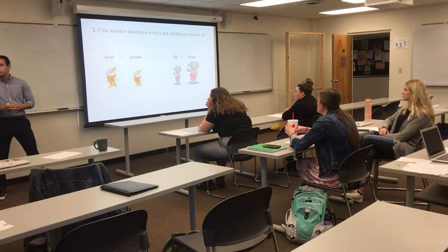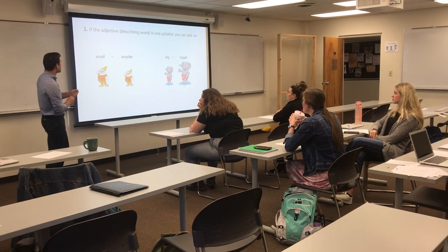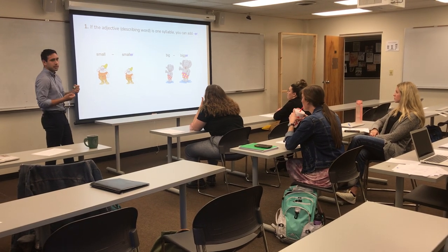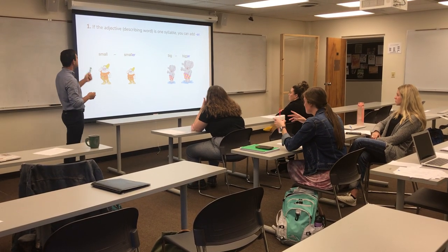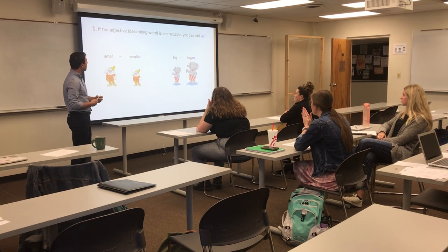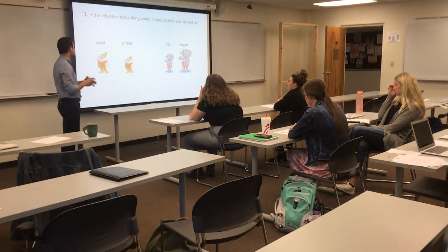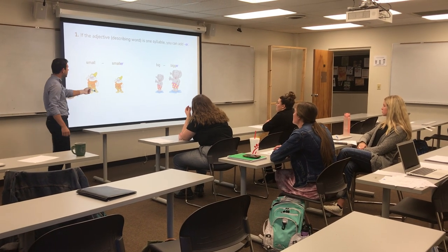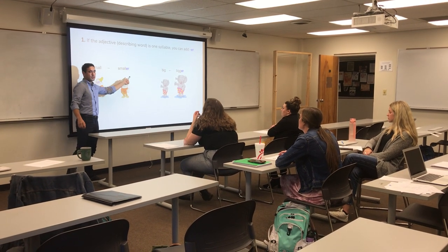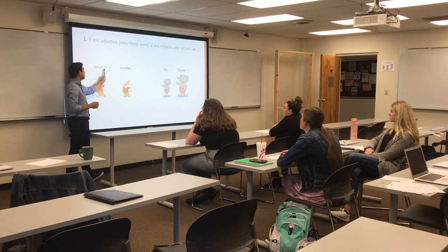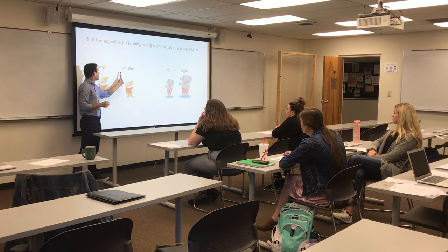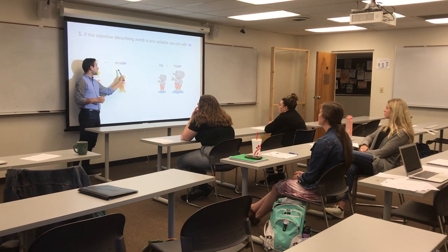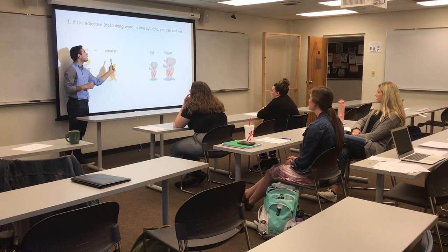So when we are comparing two things, we have several grammar rules that we have to apply. The first rule is that if an adjective has one syllable — for example, 'small,' which is one syllable — we just add ER to the word. So we have the word 'small' and our comparative will be 'smaller.'